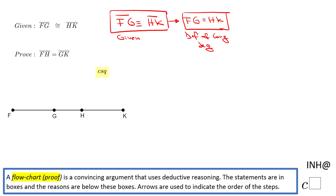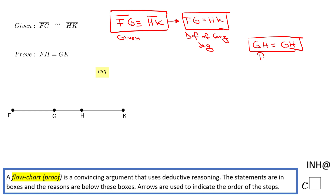The next box is GH equals itself — GH equals GH. This, if you remember, we call the reflexive property.